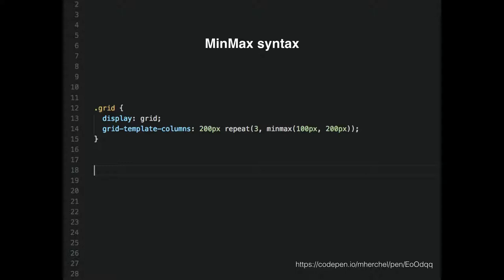Is minmax implemented differently by different browsers? I haven't found that it was. Safari is always a pain, but Grid has been fairly consistent across all browsers in my experience — I've used it in production twice now.